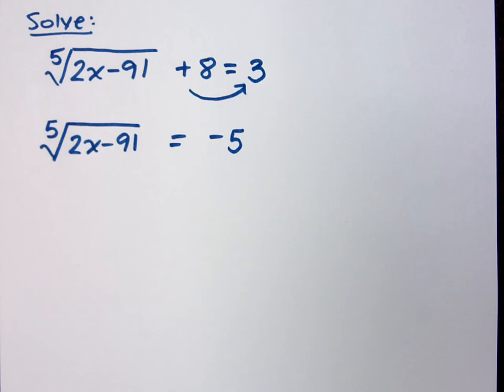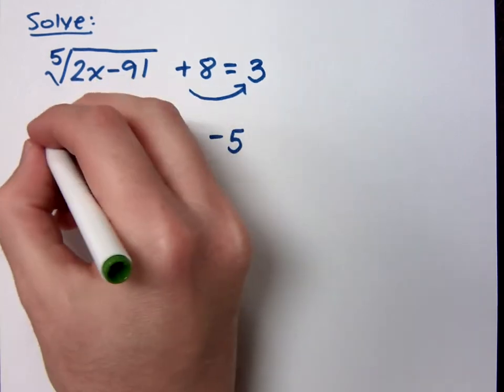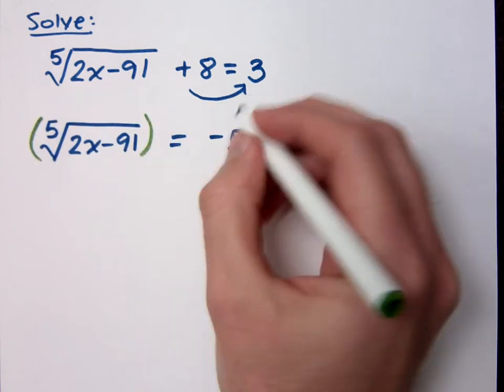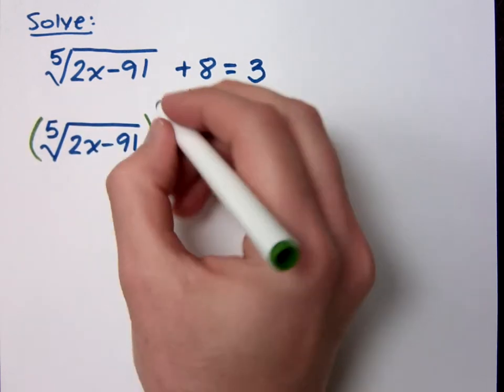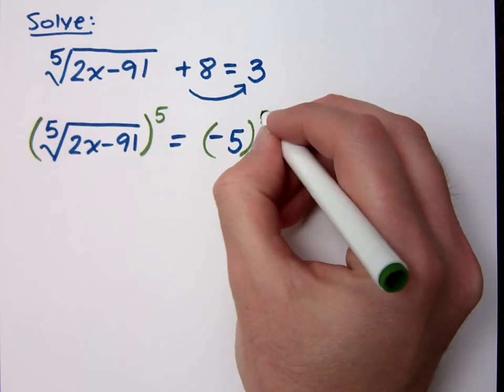Now comes time for me to use the power property. I've got a 5th root. What power will cancel out the 5th root? The 5th power. So I'm going to raise both the left and the right side of this equation to the power of 5.